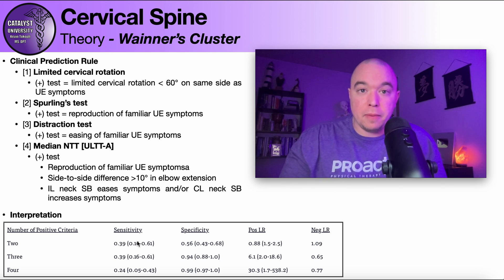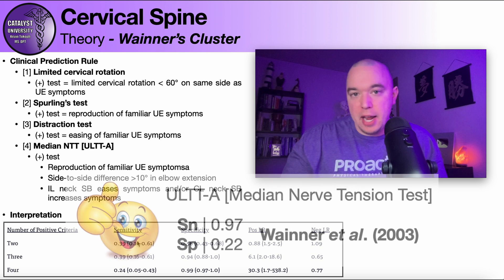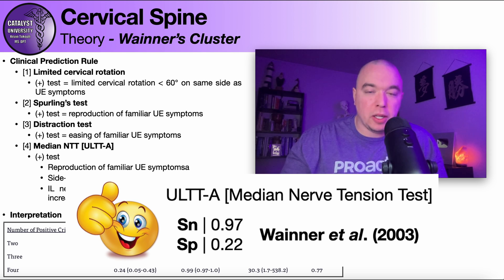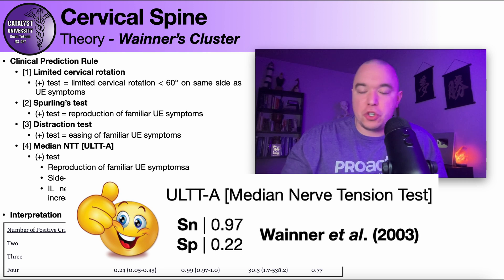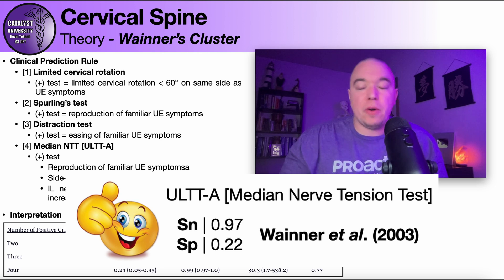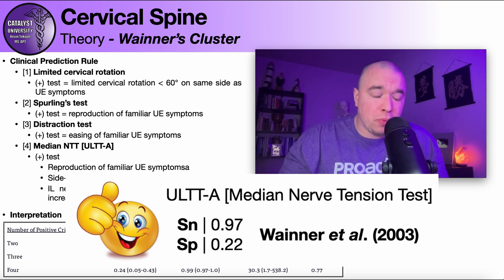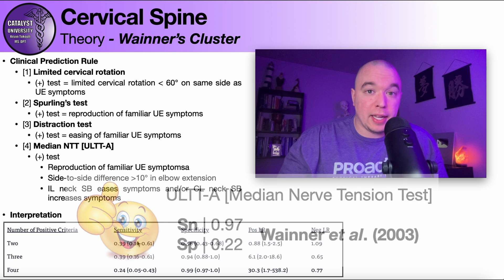To rule out a cervical radiculopathy, the upper limb tension test A — the median nerve tension test — as a standalone test has the highest sensitivity. So if you perform upper limb tension test A and it's negative, you can effectively rule out a cervical radiculopathy. Most clinicians perform it last since you're already in sitting for cervical rotation, Spurling's, and distraction, but if ULTTA is negative, it does strongly rule out the diagnosis.